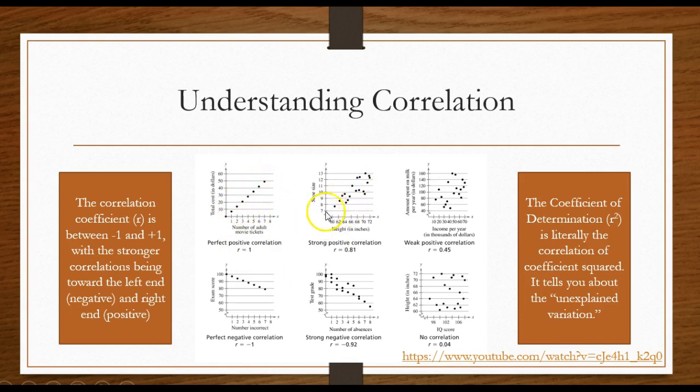So perfect correlation here, straight line and it's going up so it's 1. Here it's pretty strong correlation, very strong an r value of 0.81. Here is weak positive, a value of 0.45. This would be perfect negative, an r value of negative 1. This would be a very strong negative correlation, r value of negative 0.92 on this one. And this looks like somebody just took and threw some M&Ms into some jello. There's hardly any correlation at all right there. The r value is very close to 0.04.